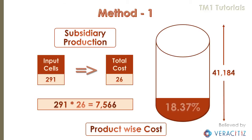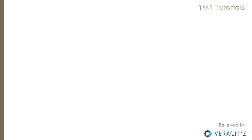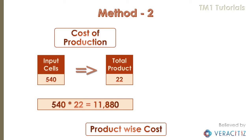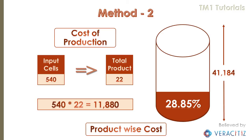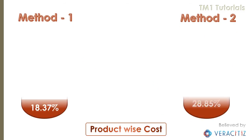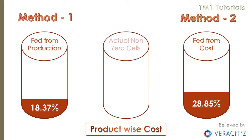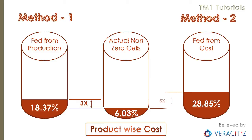That's roughly a feeding of around 19% of cells in the view. And by using Method 2, cost of production is feeding approximately 12,000 cells — a feeding of around 29% of cells. If we compare both methods side by side, both production and cost are feeding the allocated cost cube. But when we check the actual non-zero cells in the allocated cost cube, we found that only 6% of cells have values. It means the system is feeding 3 times more cells using Method 1, and 5 times more cells using Method 2. In summary, the system is over-feeding the allocated cost cube in both scenarios, which may drastically downgrade performance.